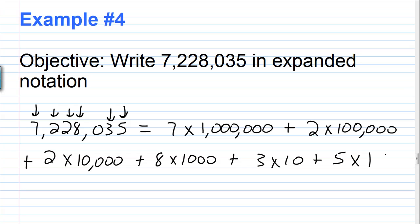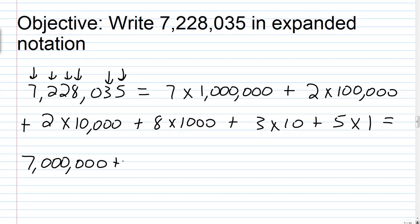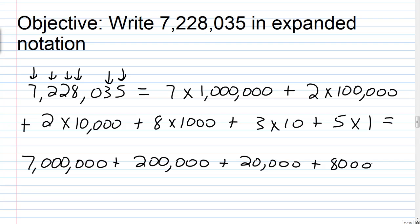Going through and multiplying: 7 times 1,000,000 is 7,000,000, plus 2 times 100,000 which is 200,000, plus 2 times 10,000 which is 20,000, plus 8 times 1,000 which is 8,000, plus 3 times 10 which is 30, plus 5 times 1 which is 5. So 7,228,035 written in expanded notation is 7,000,000 plus 200,000 plus 20,000 plus 8,000 plus 30 plus 5.